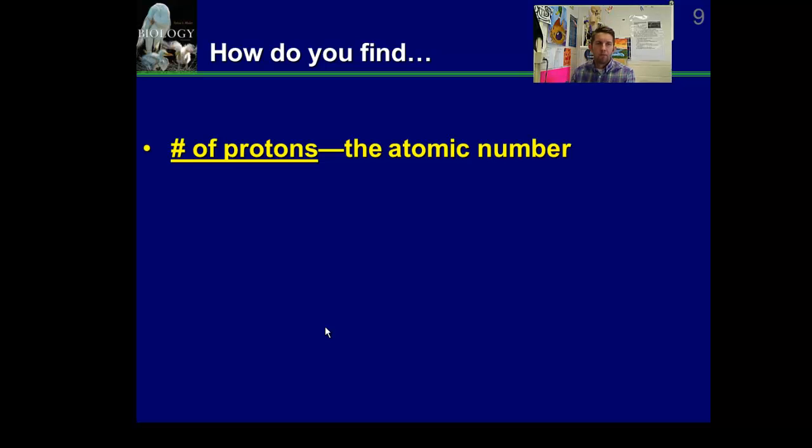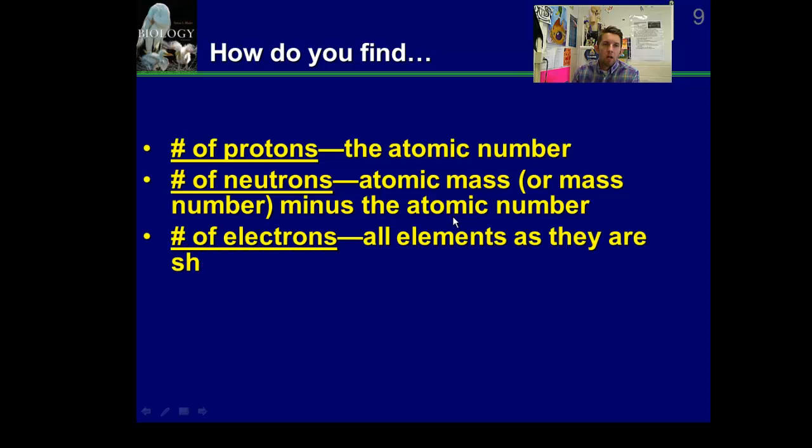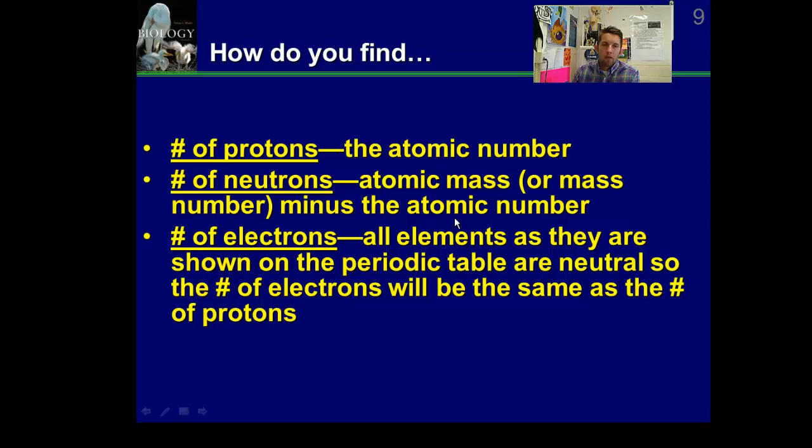Quick review. How do we find protons? We look at the periodic table. What's the atomic number? That's going to tell us protons. How do we find neutrons? They're in the nucleus. They also contribute to the atomic mass, unlike electrons. If you wanted to find the number of neutrons, you've got to take the atomic mass minus the atomic number. That will give you neutrons. Electrons, they're neutral if they're on the periodic table. It says here all elements as they are shown on the periodic table are neutral. So the number of electrons will be the same as the number of protons.